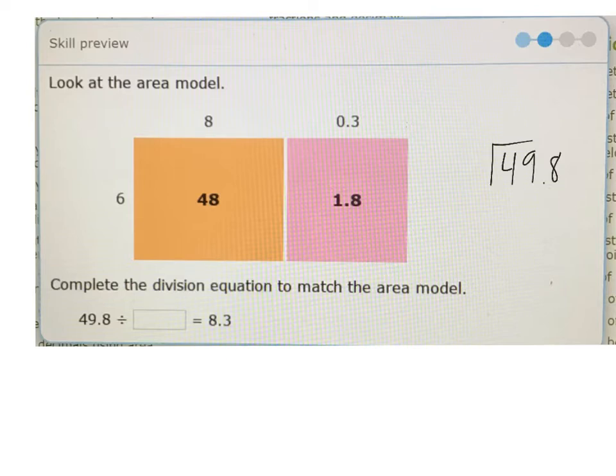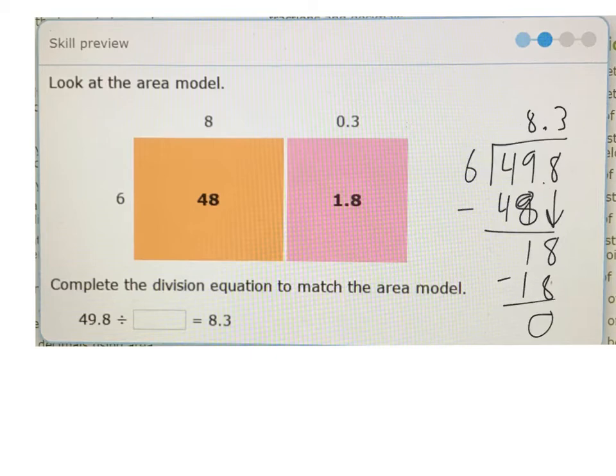49.8 divided by 6. How many times can I take 6 out of 49? 6 times 8 is 48. 8 times 6 is 48. 48 minus equals 1. Decimal there. Bring down the 8. How many times can I take 6 out of 18? 3. 3 times 6 is 18, minus equals 0. So we had a little bit of messing about here.